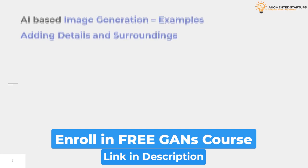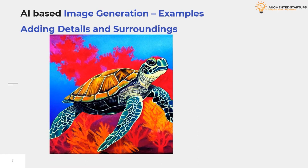We can create images by adding details and surroundings to our prompt. Whatever we want to create, we need to add the details and the surroundings. Your subject can be somewhere, do something, or have a special quality. For example, the turtle may be swimming underwater around some colorful corals — so the prompt becomes: a turtle swimming underwater near colorful corals, expressionist painting. By adding details and surroundings, the AI will produce good images.